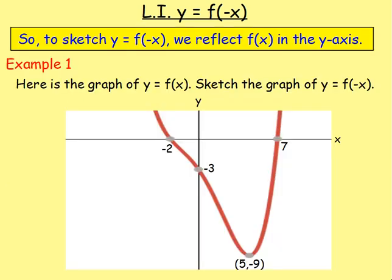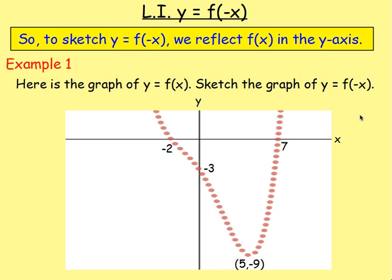Let's try an example of that. So example one: here is the graph of y equals f of x. Sketch the graph of y equals f of negative x. We have y equals f of x here with certain points on this graph. Let's draw y equals f of negative x on the same diagram — we'll change this to a dotted line. All we want to do is reflect it over this y-axis, so this y-axis becomes a line of symmetry.